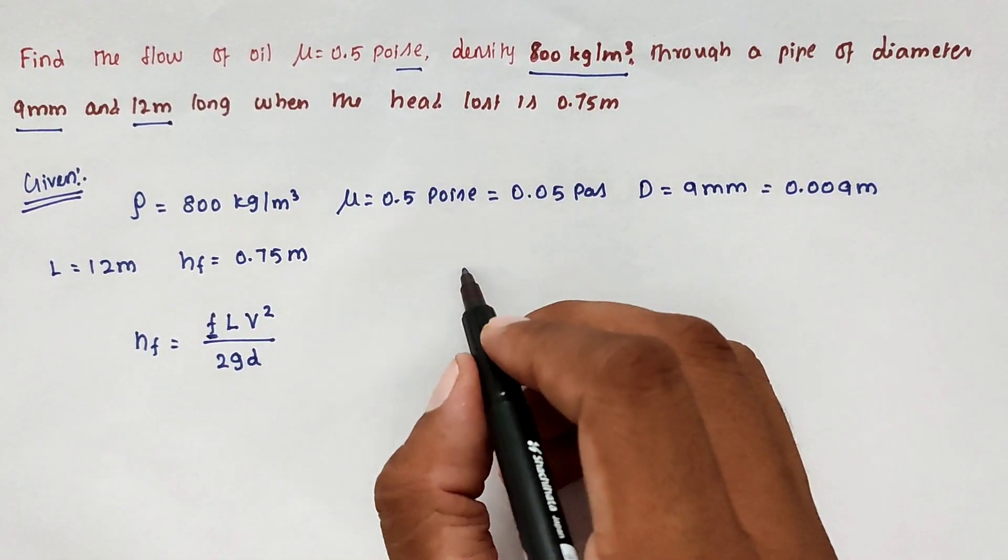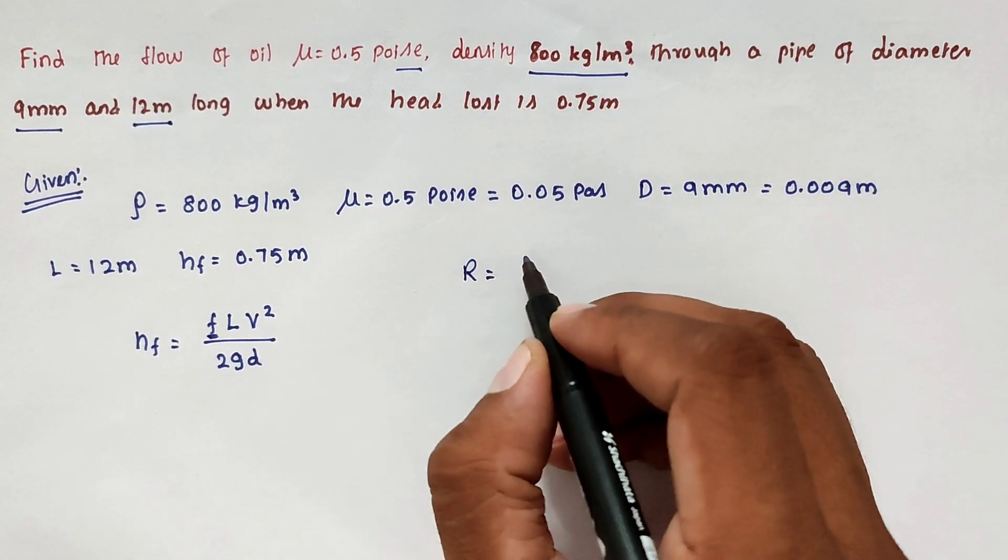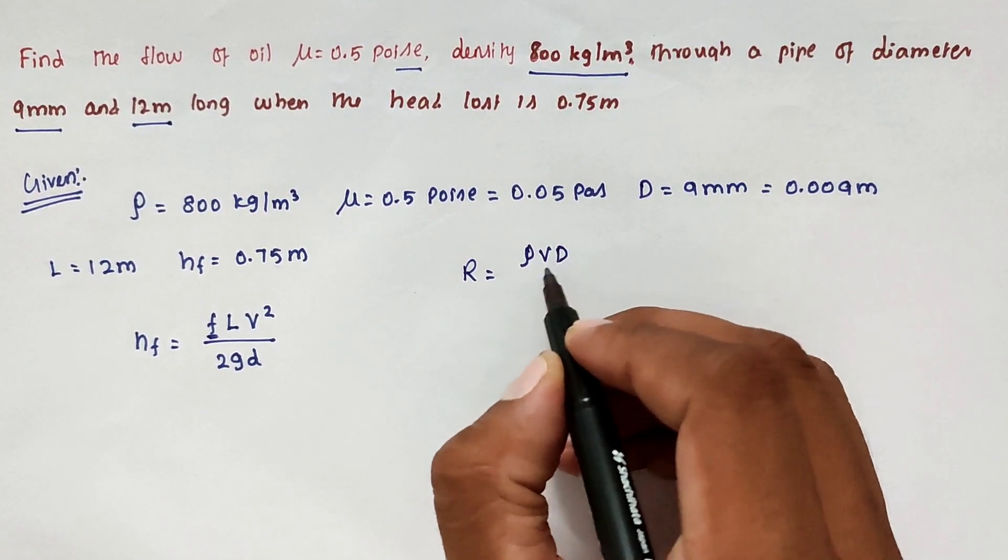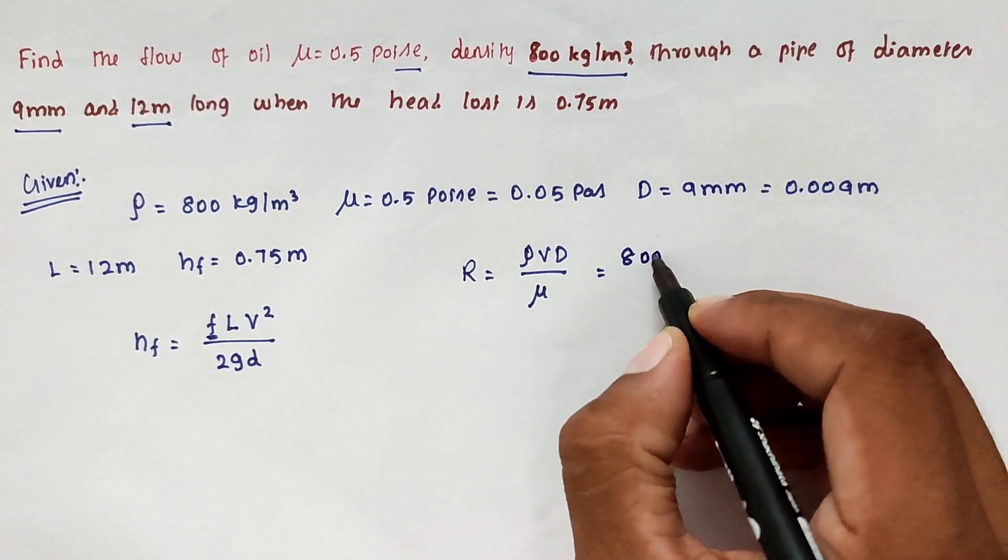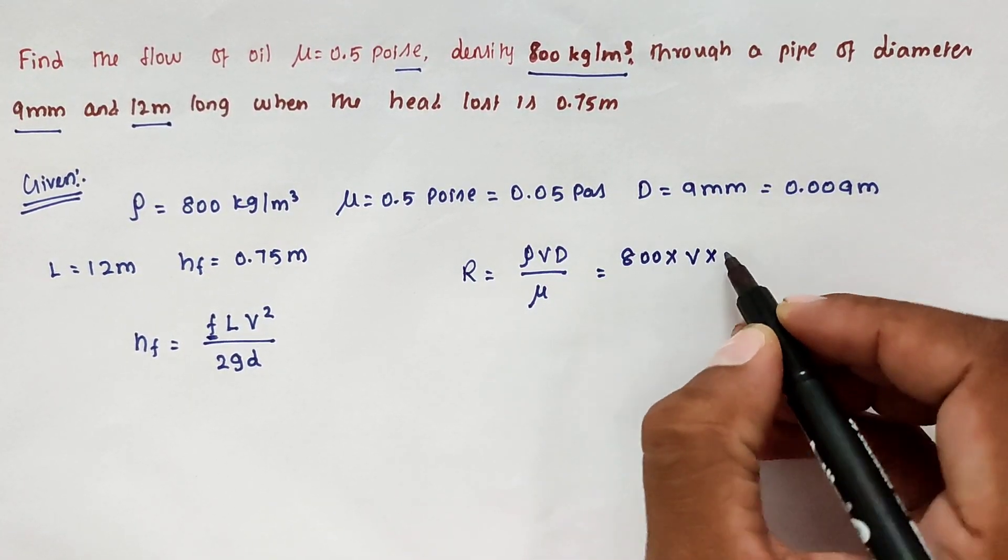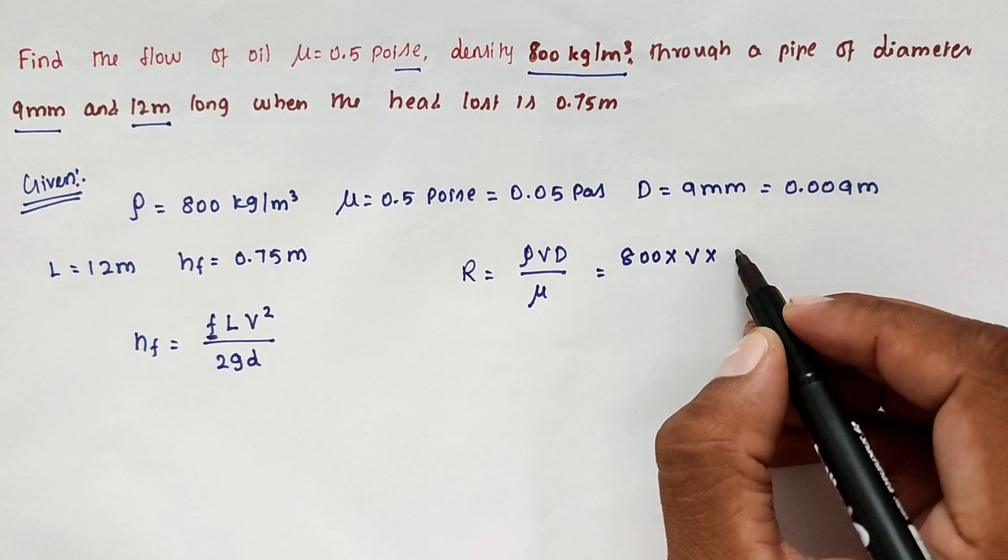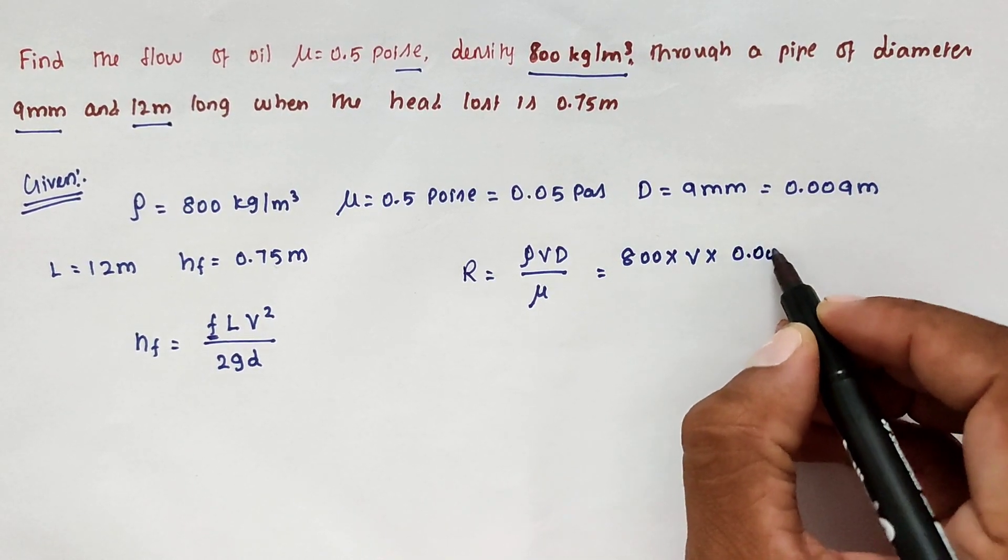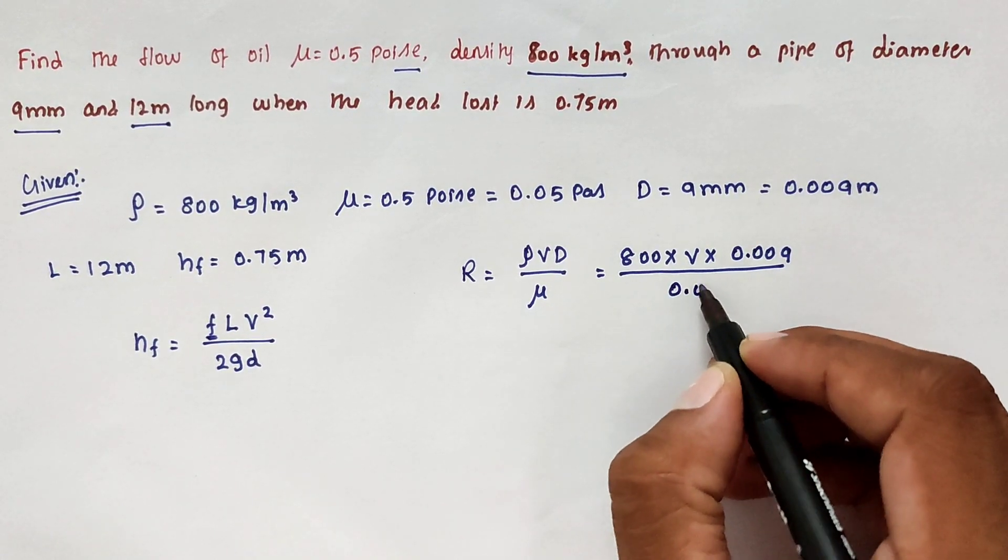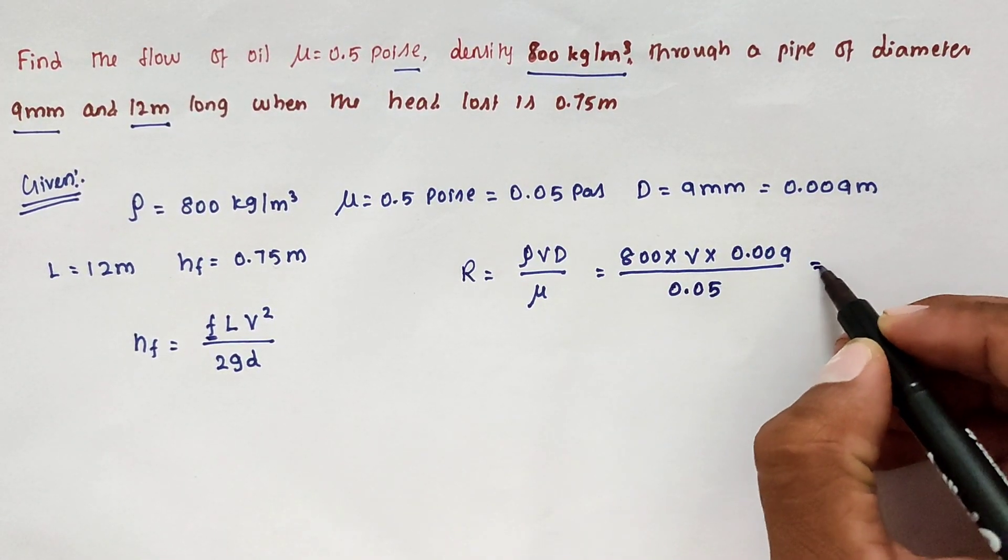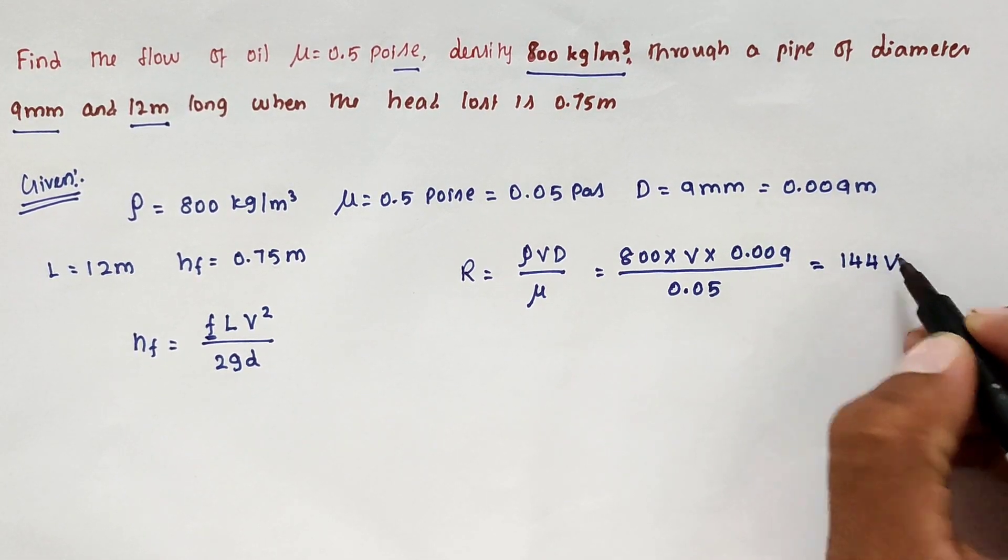Now we can take R equal to ρ into V into D divided by μ. We can substitute all the values: 800 into V, we don't know the value, into D value 0.009 divided by μ value 0.05. Solving this we got the value of 144V.